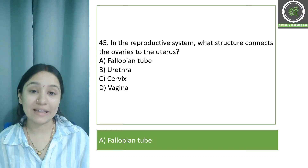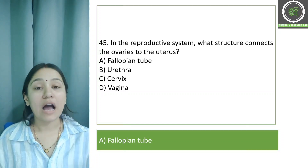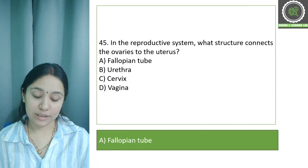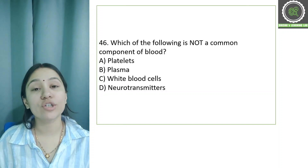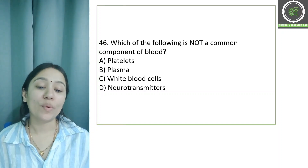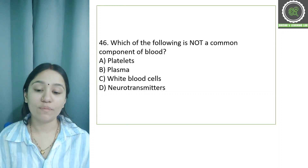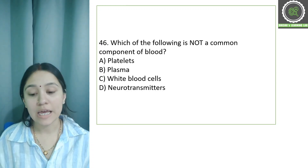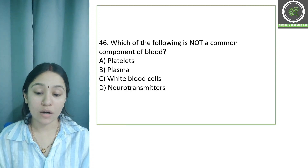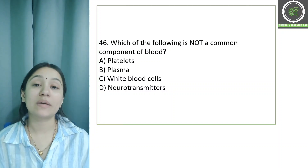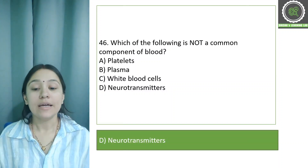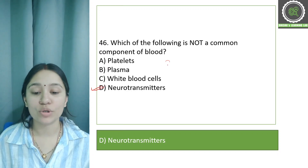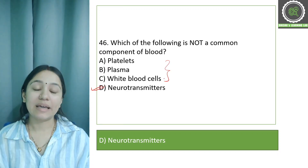Question number 46: Which of the following is not a common component of blood? Options: platelets, plasma, white blood cells, and neurotransmitters. The correct answer is option D, neurotransmitters, because the other options — platelets, plasma, and white blood cells — are all components of blood.